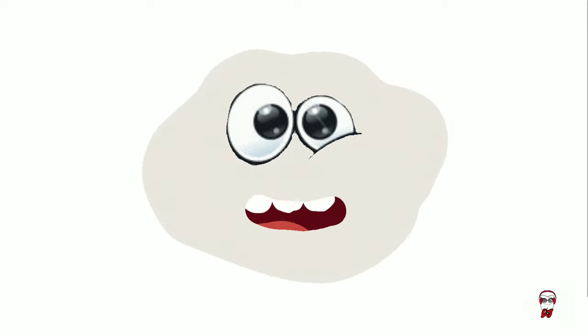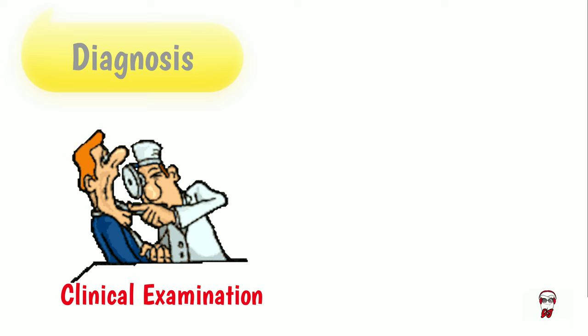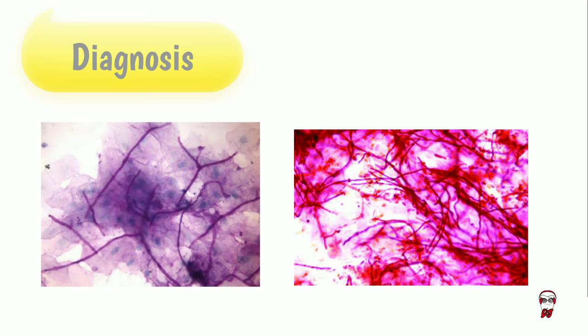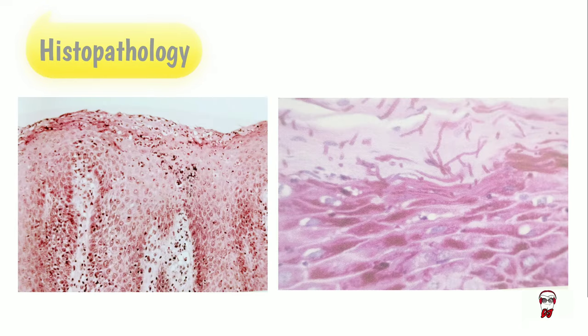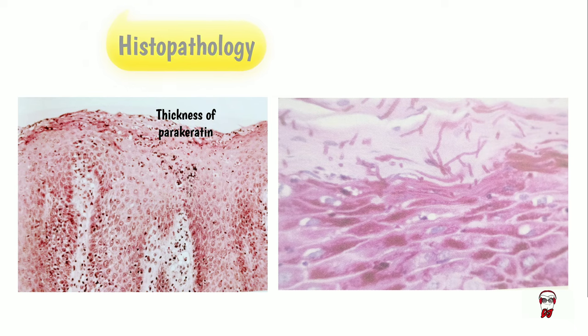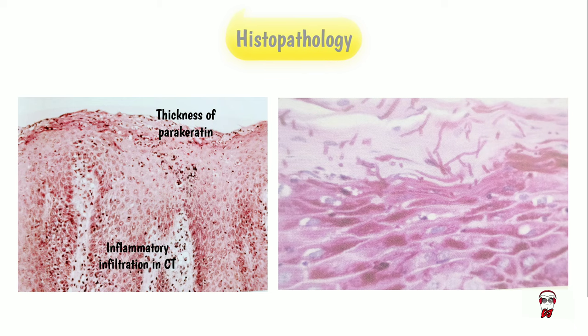Now that we know what I am and how I present myself, let's figure out how to diagnose me. It's quite easy — you can determine what I am by clinical examination of the patient, or just take a look at me under the microscope. The Periodic Acid-Schiff, or PAS, method can be used. Cytological findings will show candidal hyphae in yeast cells present in the cell walls. In histopathology, you can see thickening of the parakeratinized layer with elongation of the epithelial rete ridges, inflammatory infiltration in the connective tissue, and candidal hyphae embedded in the parakeratinized layer.